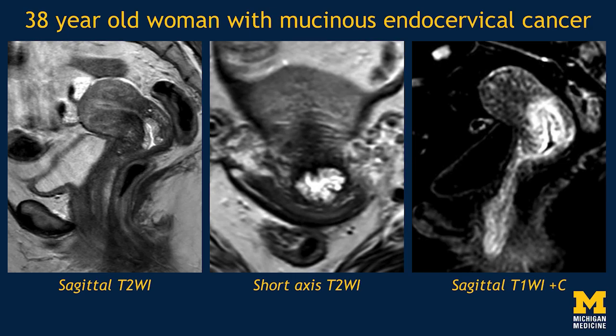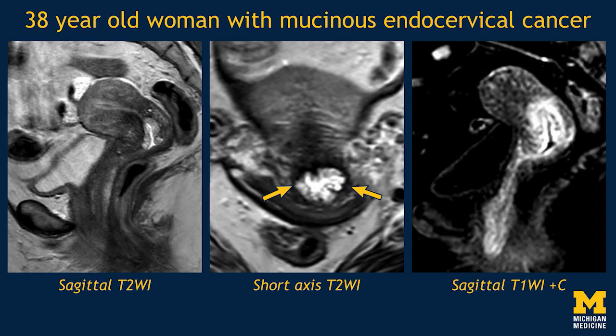Here's one patient who has more of a mucinous-type endocervical cancer. We've all seen nabothian cysts in the cervix — those mucinous glands that become obstructed and become quite enlarged in some cases — and they can be tough to distinguish from mucinous endocervical cancer. But I would look for soft tissue that enhances and for intermediate or gray signal rather than pure fluid signal you might see in something that's just mucinous. We can see a tumor here with a kind of polypoid appearance that's actually just multiple locules of mucin, and we can see that the whole thing was hyper-enhancing.